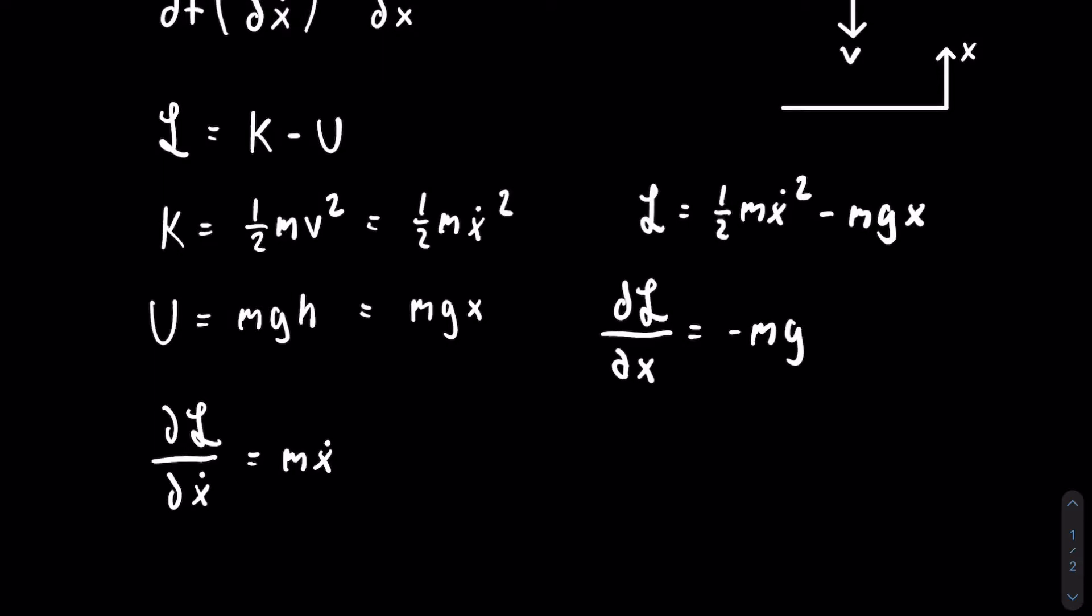Our last derivative is the time derivative of the partial of the Lagrangian with respect to x dot. This is going to be equal to m times the time derivative of x dot. But remember what we said before? That's just going to be equal to m x double dot.